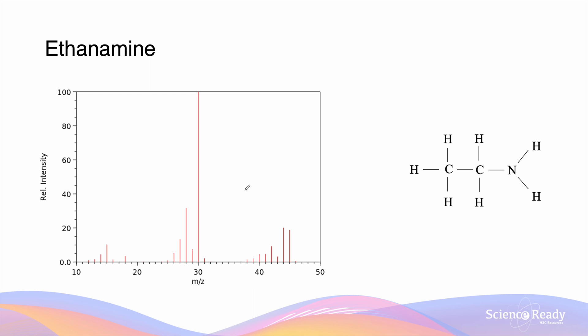Our last case that we are going to be looking at is for the amine ethanamine. The molecular ion peak is at 45, which is consistent with the molar mass of this compound. The base peak is at 30, which is exactly 15 mass-to-charge ratios from the molecular ion peak. That's again indicative of this methyl group. So we can expect that these two peaks are produced from the cleavage of the CC bond that is within the amine.